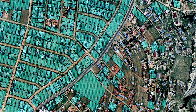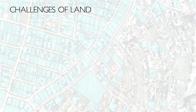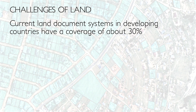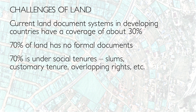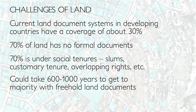Focusing now on land specifically: currently in developing countries, most land coverage is around 30%, meaning 70% of the country is not covered by land documents. In those areas, we have social tenures like customary tenure, informal settlements, overlapping rights, and so on. In reality, to move from 30% to a situation where the majority of people have some form of land documents will probably take about 600 years.